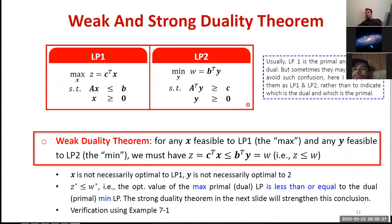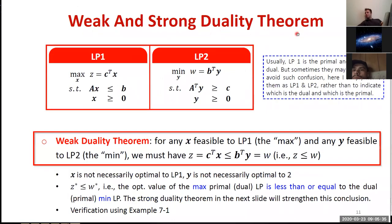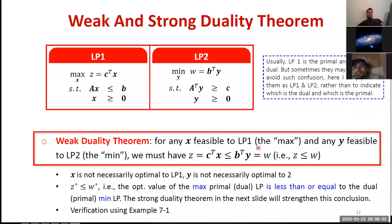Today we're going to start something new: the weak and strong duality theorems. We define LP1 as the maximization problem and LP2 as the minimization problem — I name them LP1 and LP2 instead of primal and dual because the dual of the dual is the primal, and it doesn't matter which is which. The weak duality theorem states: for any x feasible to LP1 and any y feasible to LP2, we must have z less than or equal to w.